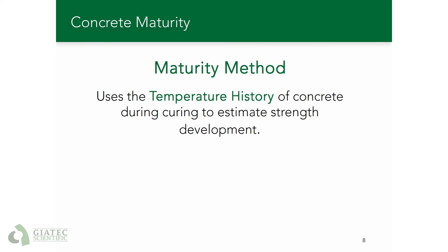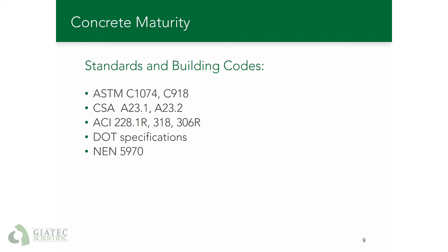What is concrete maturity? The maturity method uses the temperature history of concrete to estimate its strength. This method is standardized by ASTM and other standard bodies worldwide. More importantly, it is adopted by building codes and DOT specifications as a method of estimating the in-place strength of concrete. Engineers are actually allowed to specify and use this method instead of breaking field-cured specimens, which is a huge advantage of the maturity method.